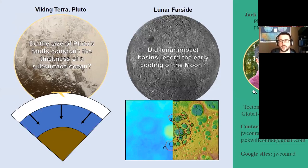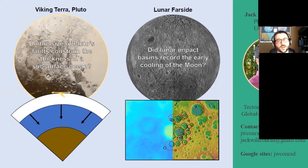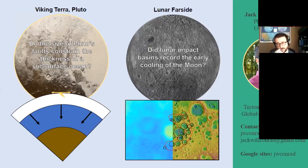I thought I would start off by talking about two projects which I've published on already. The first is on the left — I've been looking at the tectonic features of Viking Terra on Pluto. To give you a sense of where that is, that's to the west of the big basin of Sputnik Planitia. There's a whole bunch of large normal faults in that area, and we can use these faults to get a sense of the thickness and evolution of the subsurface ocean on Pluto. Because these faults are directly linked to the freezing of the subsurface ocean and the expansion of the overlying ice shell, causing surface strain — by looking at the size of these features, we can get a sense of the thickness of the ocean when they formed.